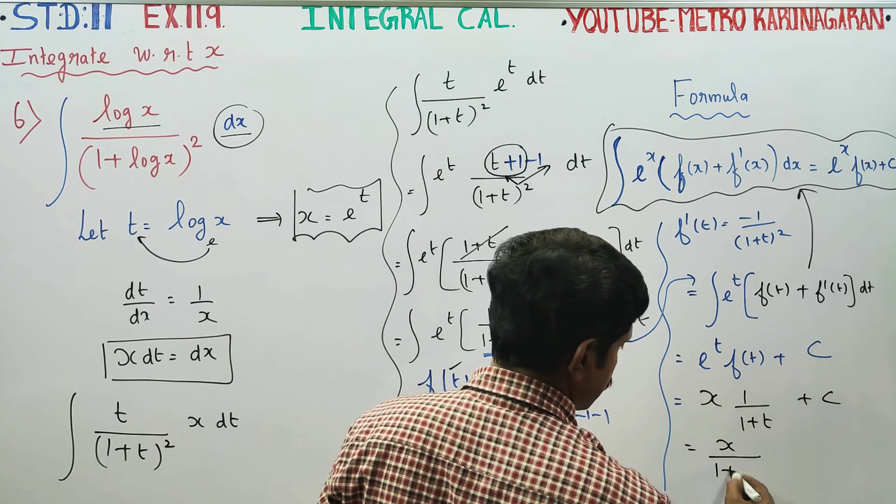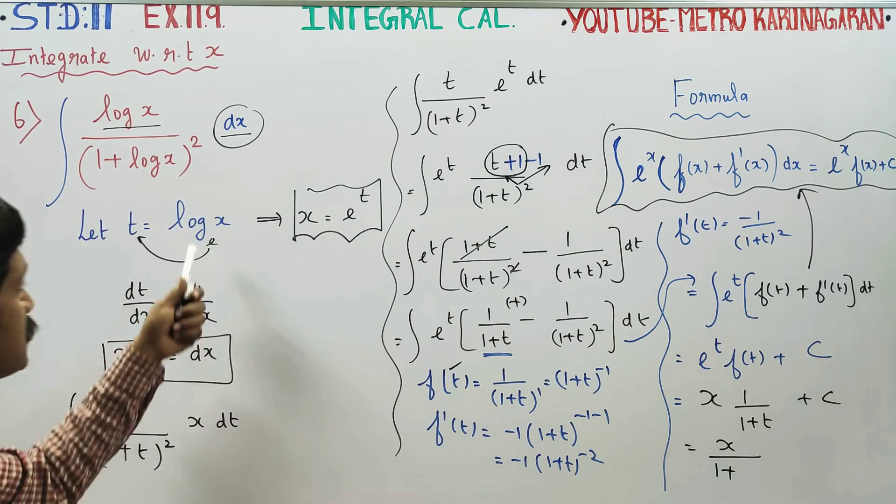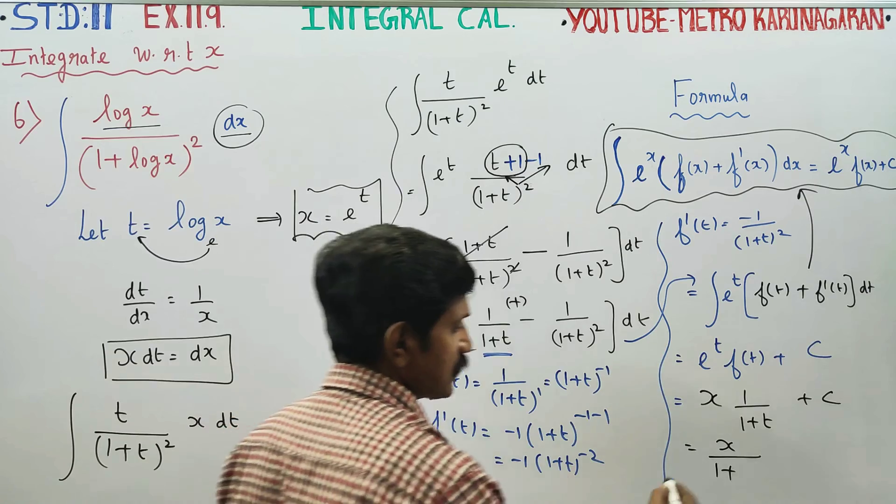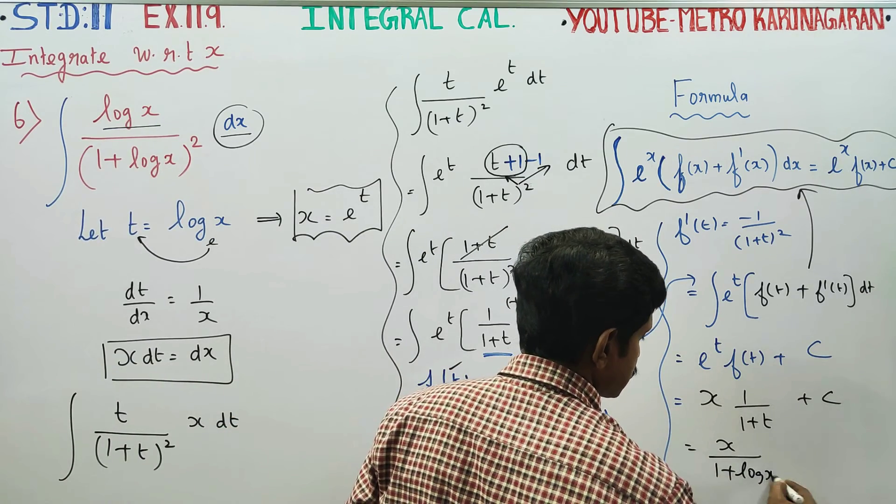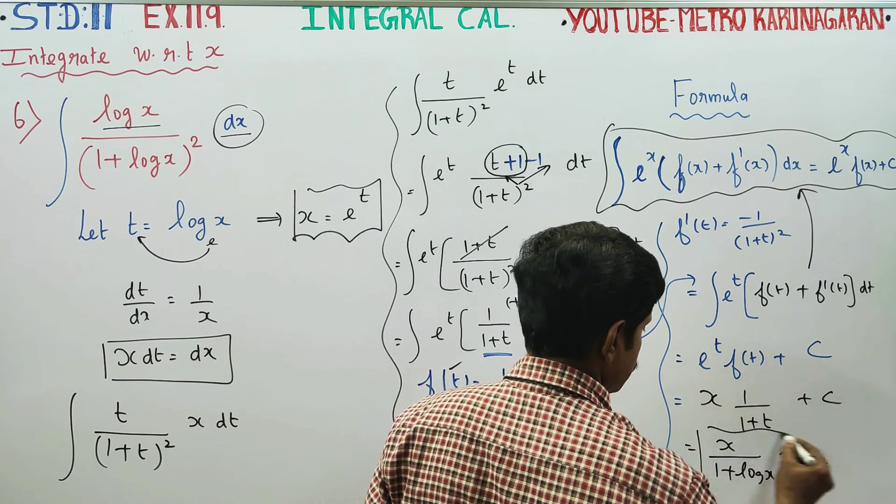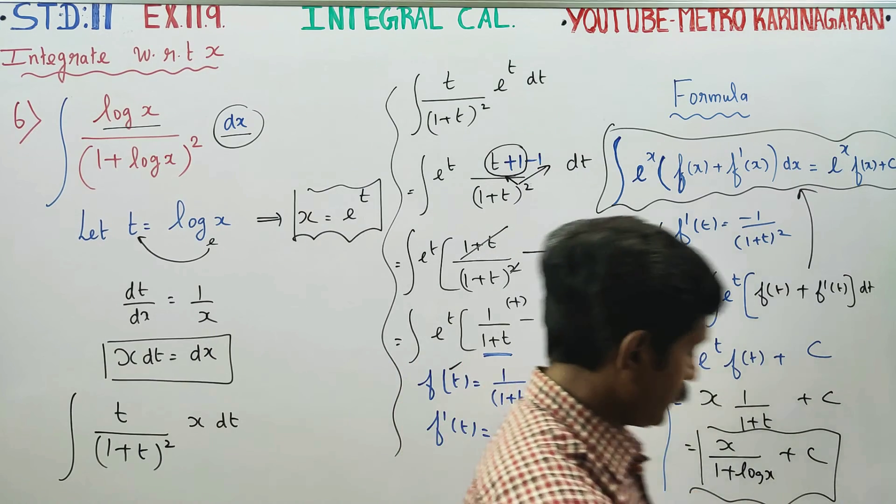But what is my t? t is log x. So the final answer is x times 1 by 1 plus log x plus c. Thank you.